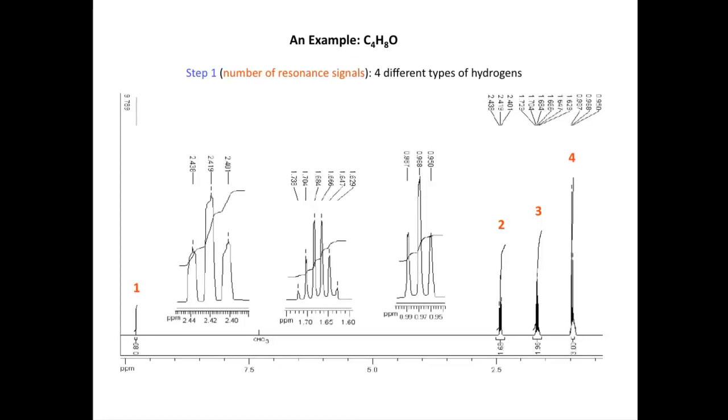And in step one, we're going to be looking at the number of resonance signals that we have in the spectrum. And we have one, two, three, four. So we have four different types of hydrogens.